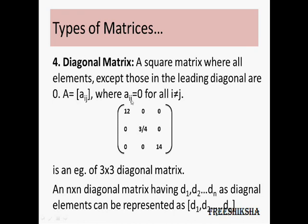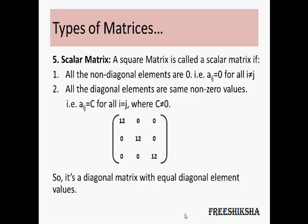So for a diagonal matrix, aij is equal to 0 for all i not equal to j. It has to be an n×n matrix, i.e., a square matrix. If d1, d2, up to dn are the diagonal elements, then you can represent this diagonal matrix as diag[d1, d2, ..., dn].